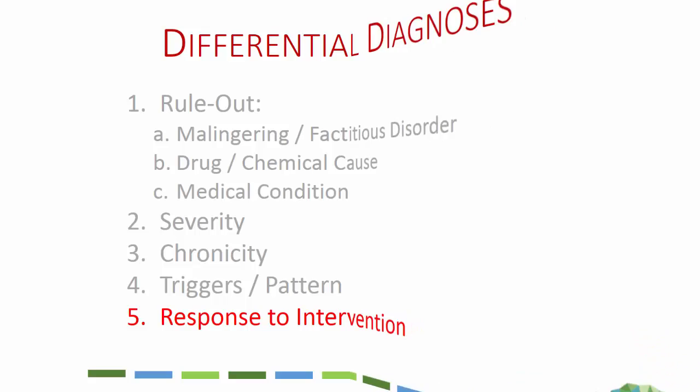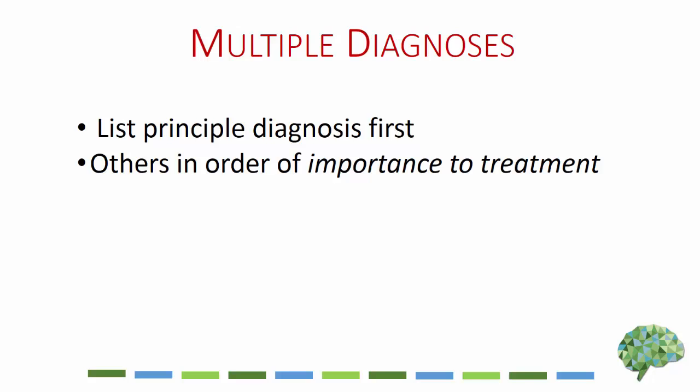A final issue in this section has to do with multiple diagnoses. Some clients have several diagnoses that are legitimate and need to be listed. You want to list the principal diagnosis first, and then in order of importance to treatment, list the others — which is really crucial.